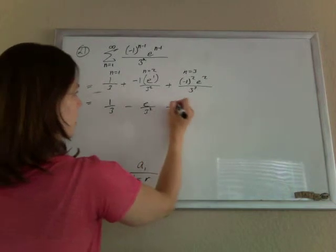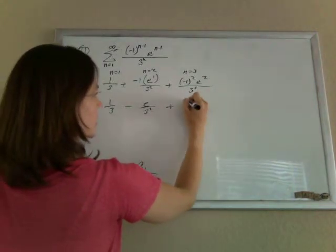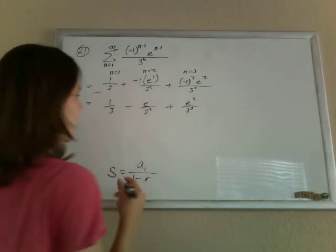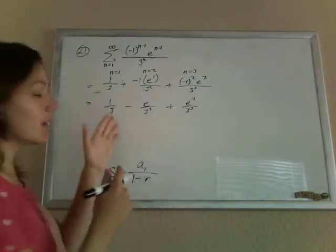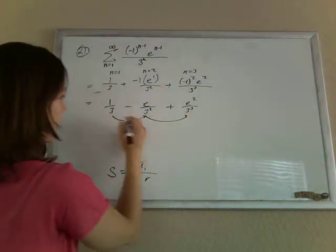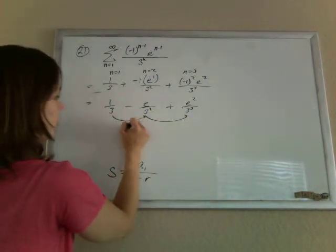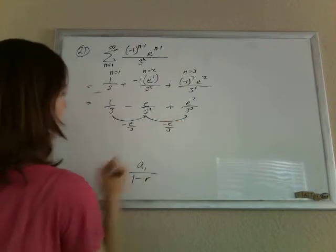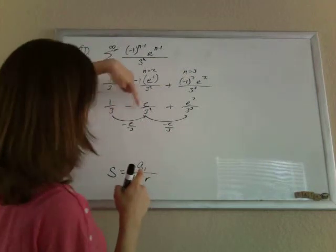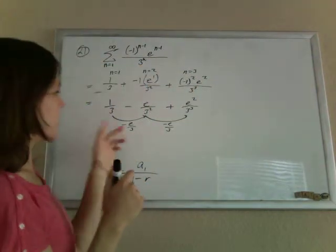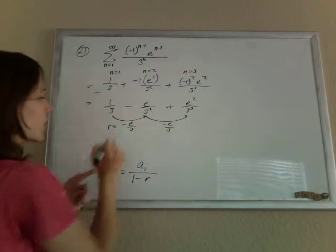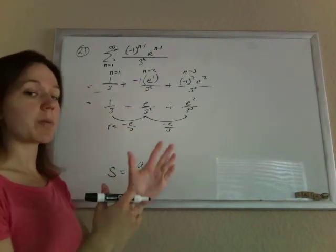1 over 3 minus e over 3 squared plus e squared over 3 cubed, we can kind of sense that it is going to be geometric, and we're multiplying by negative e over 3 each time. So multiplying the tops by e's, multiplying the bottoms by 3's, and the sign is changing so it's negative. So that is our r. The common ratio, what we're multiplying by every time,